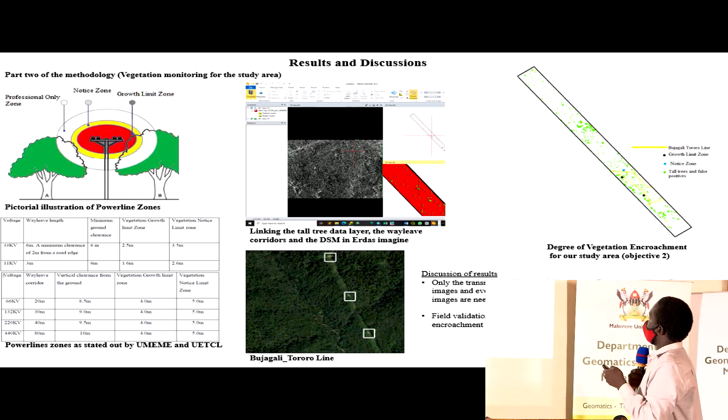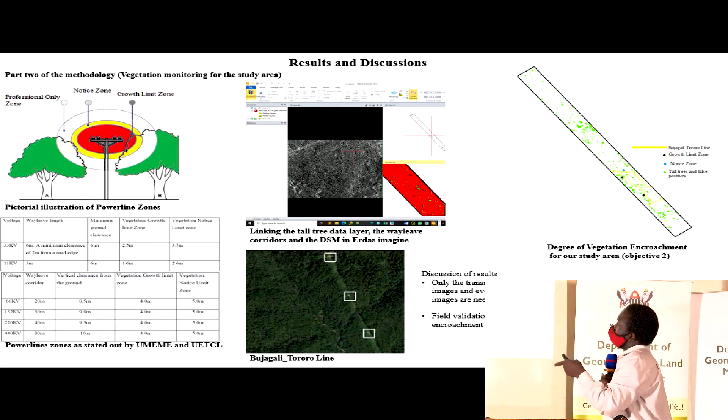Now we are going to objective two. These growth limit zones and notice limit zones, I'm getting from UETCL and Umeme documents.